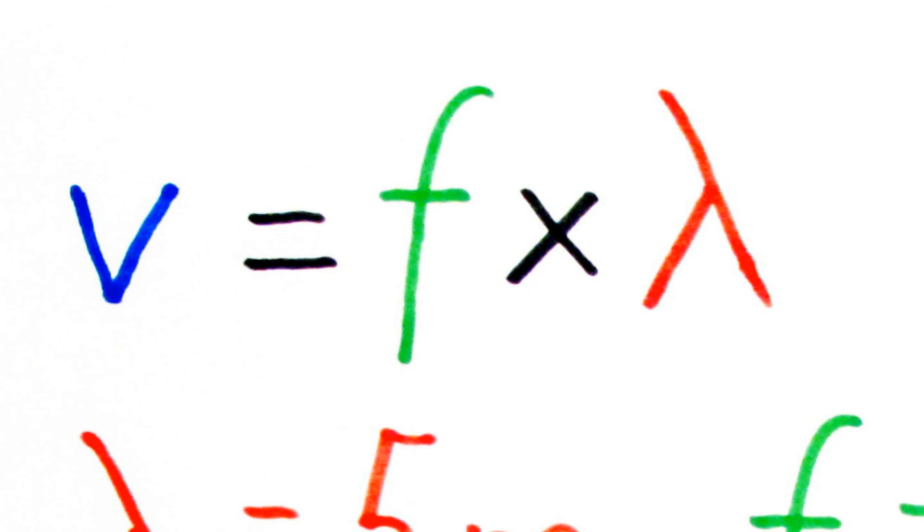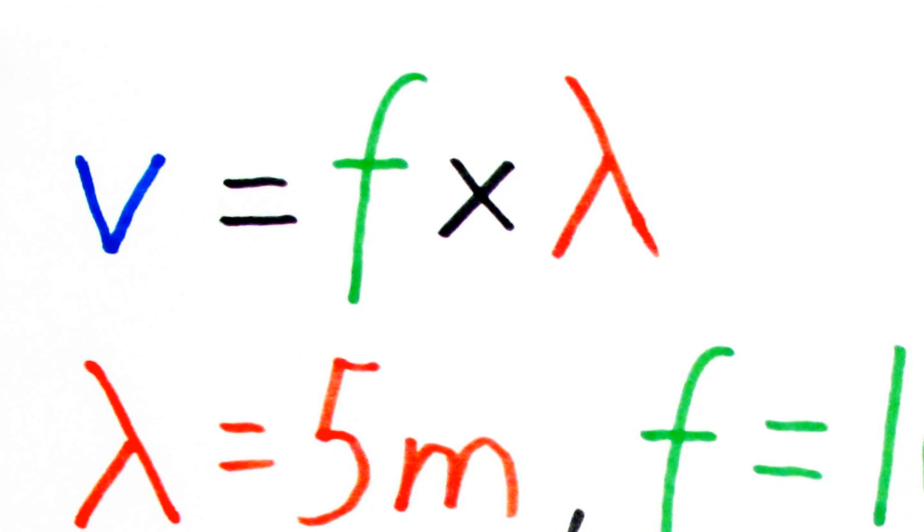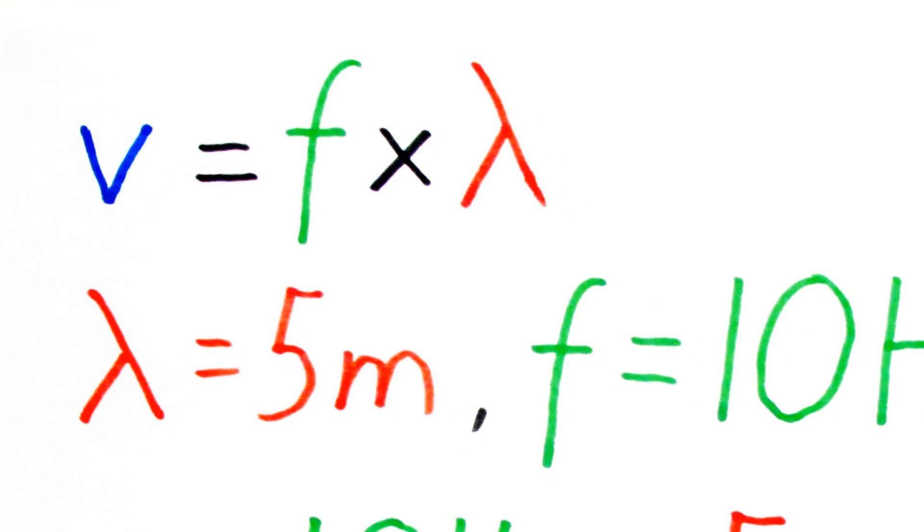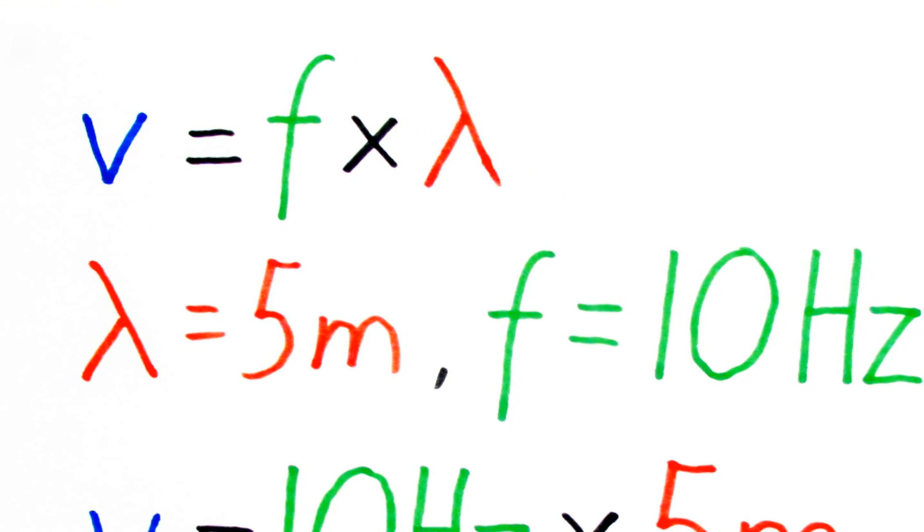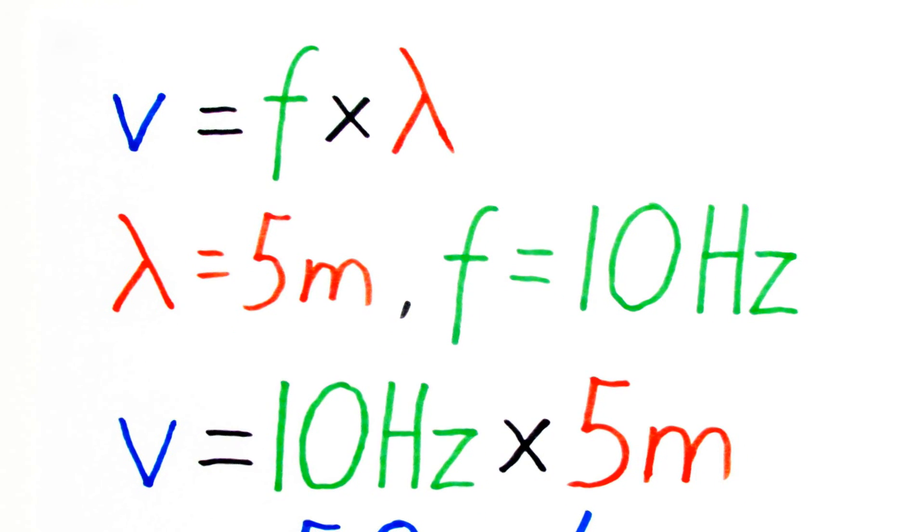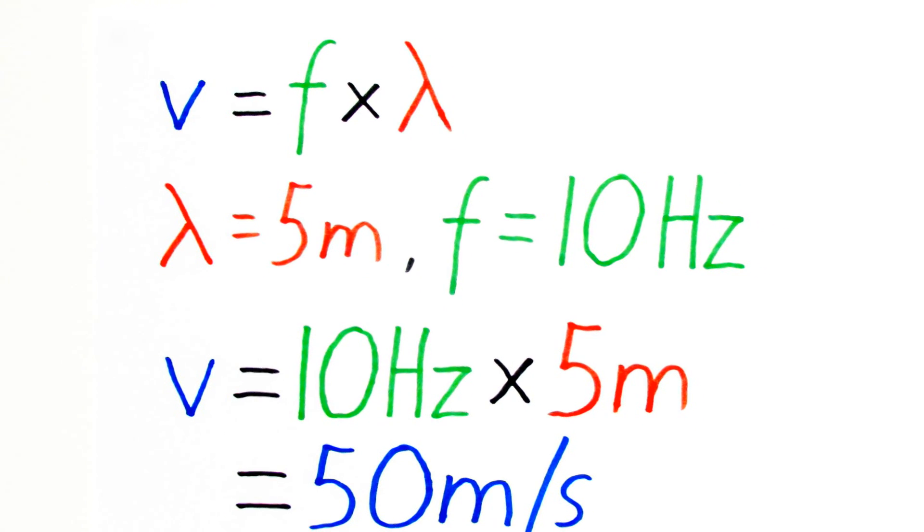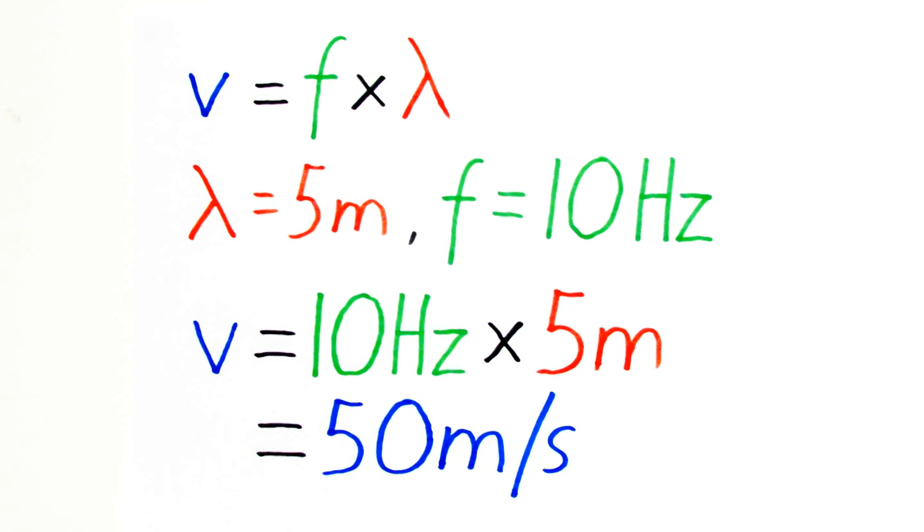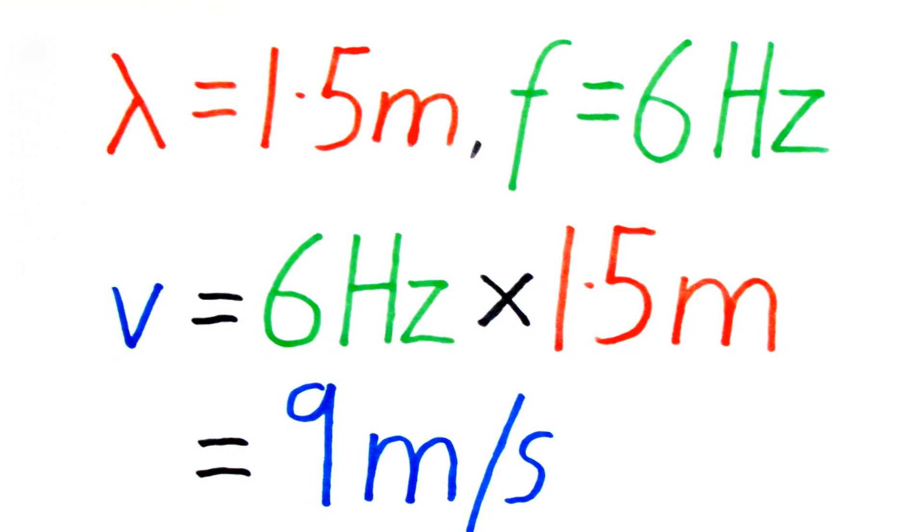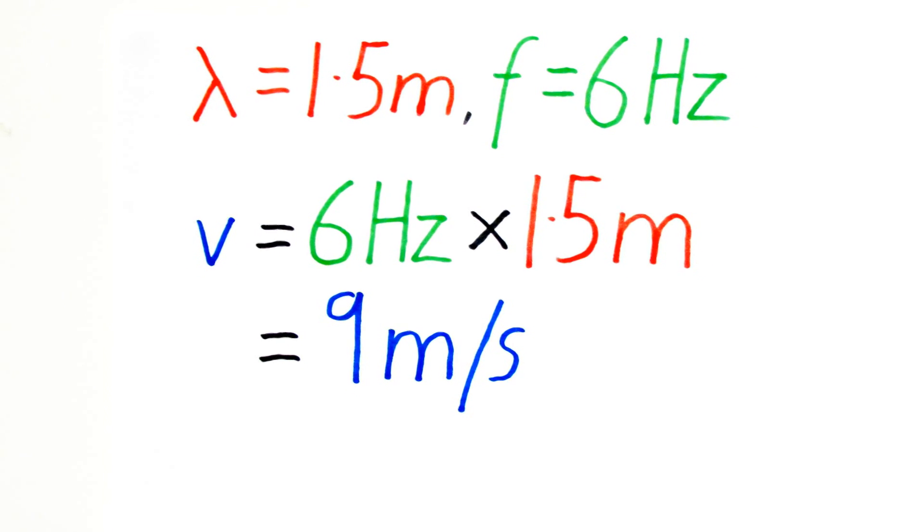So let's have a look at a few examples. Remember on the foundation paper you won't need to rearrange this equation you just need to put in the numbers which you're given. So you'll be given a frequency and a wavelength. Let's take for example a wave with a wavelength of five meters and a frequency of ten Hertz. The equation tells us that the velocity of the wave is equal to the frequency multiplied by the wavelength so we just multiply five meters by ten Hertz and we get a velocity of 50 meters per second. If the wavelength was 1.5 meters and the frequency was 6 Hertz then 1.5 multiplied by 6 gives us a velocity of 9 meters per second.